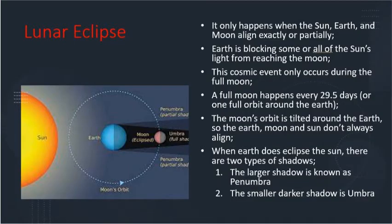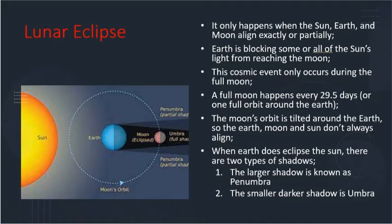During a lunar eclipse, earth gets in the way of the sun's light hitting the moon. That means that during the night a full moon fades away as earth's shadow covers it up. The moon can also look reddish because earth's atmosphere absorbs the other colors while bending some light towards the moon — the same reason sunsets are orange and red. During a total lunar eclipse, the moon is shining from all the sunrises and sunsets occurring on earth.